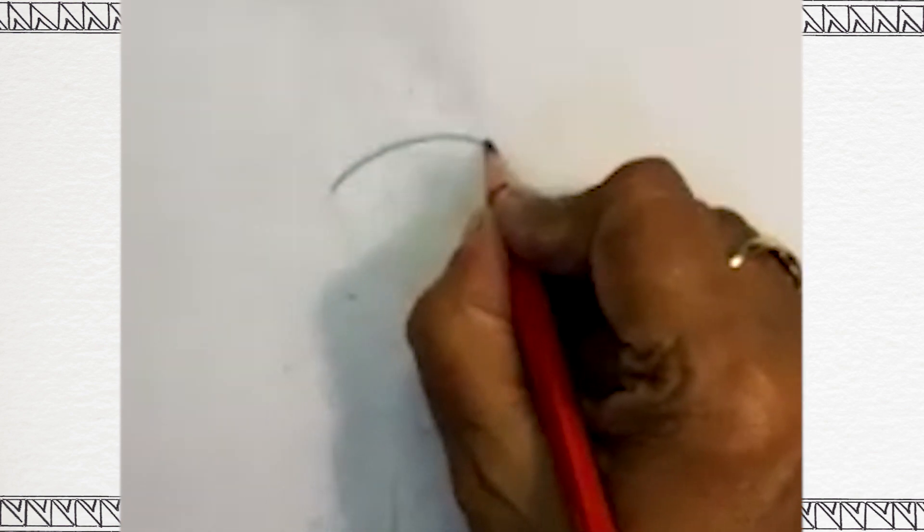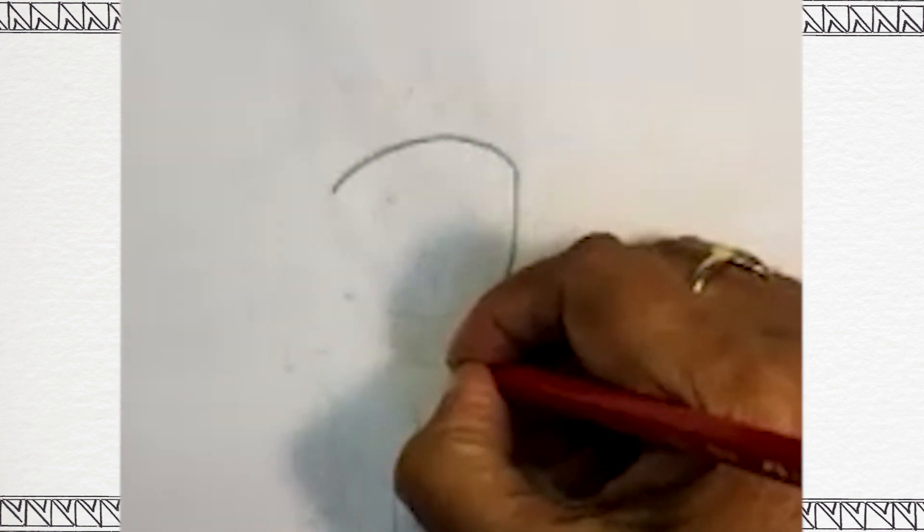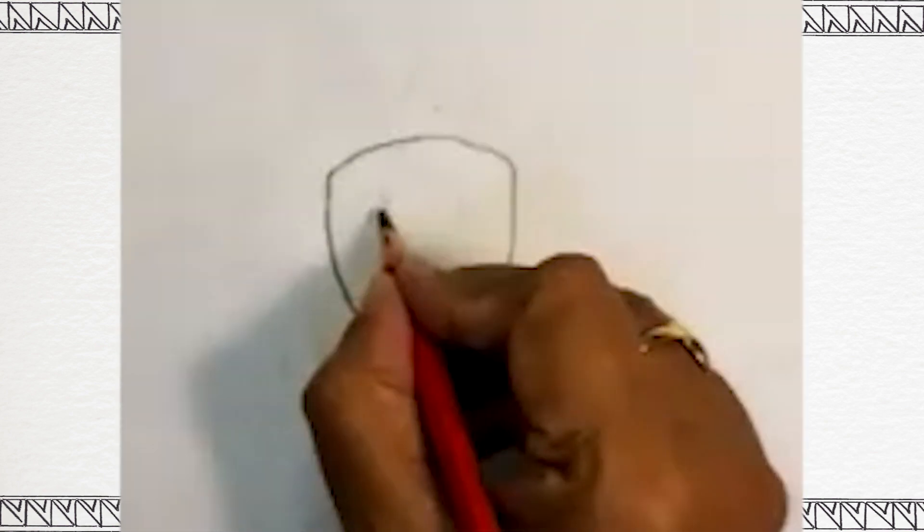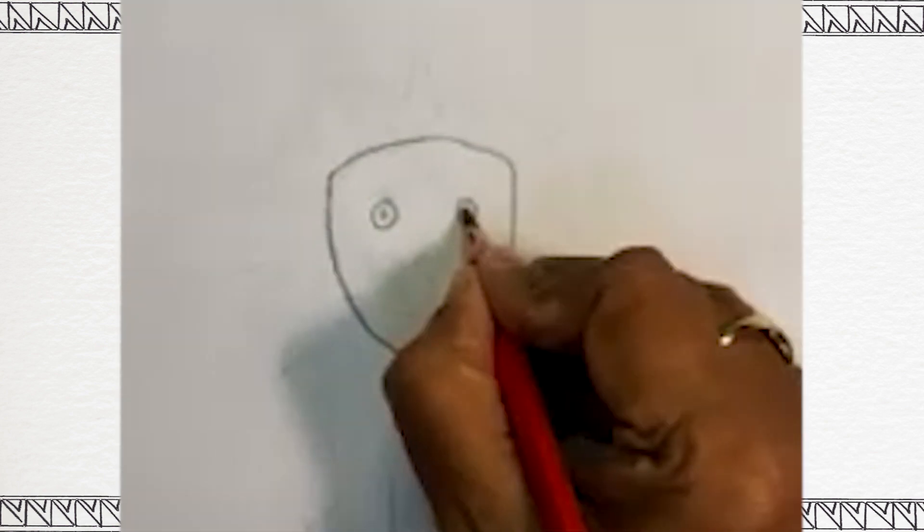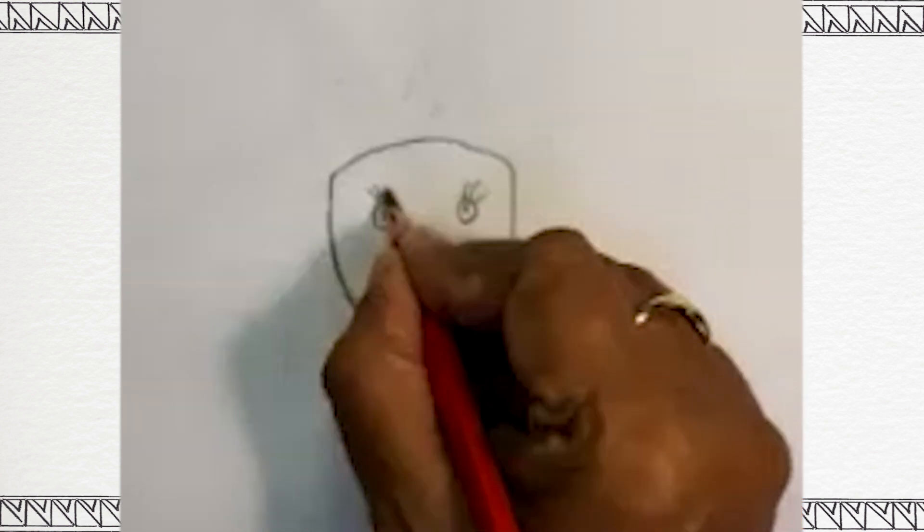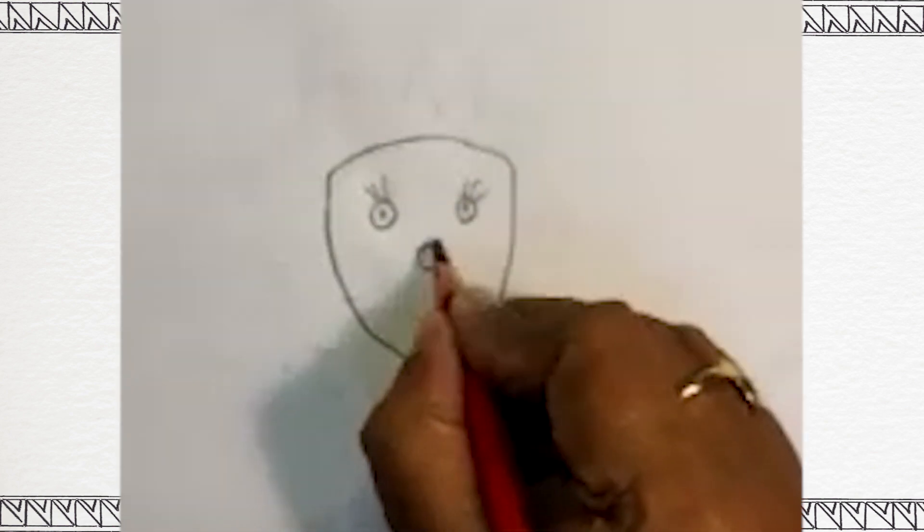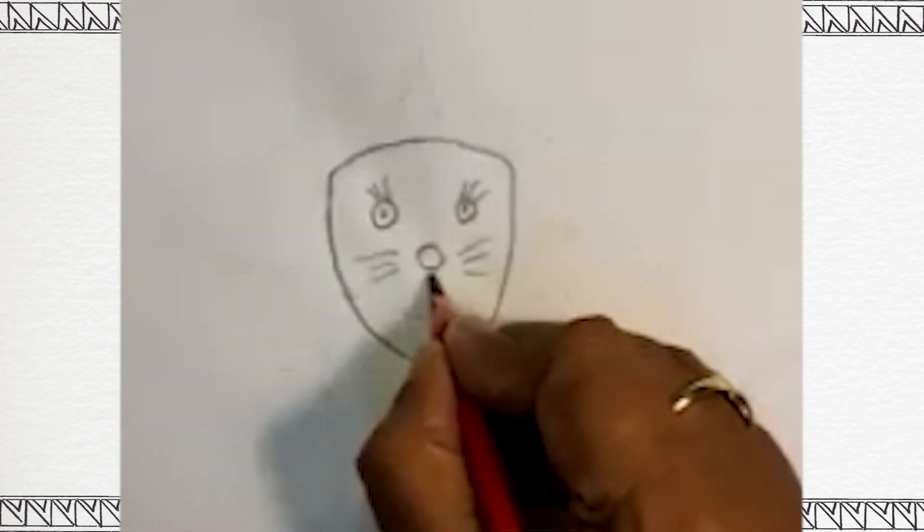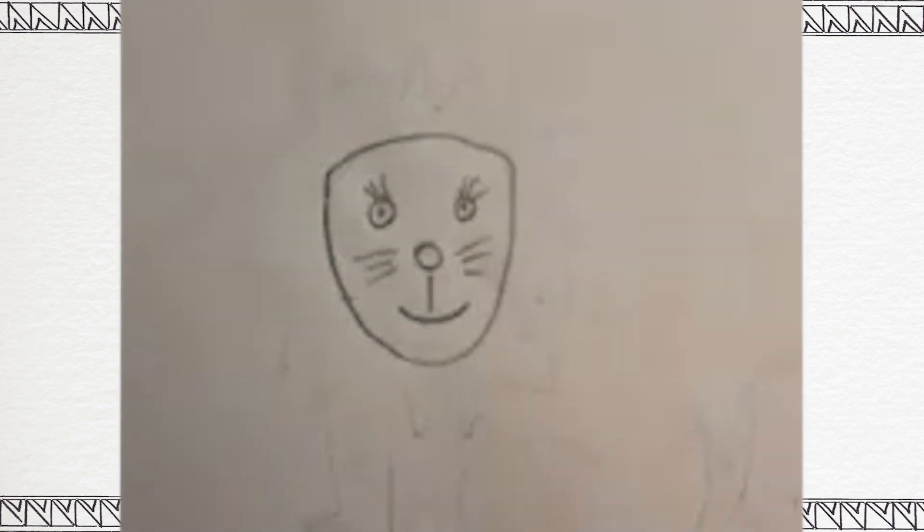We will draw the face of the lion. Make a big U and join it. In the U, make two eyes and some eyelids. Then make one nose and three whiskers. You can draw more whiskers and a smiley mouth.